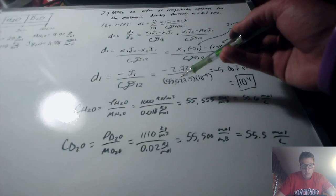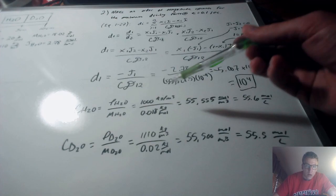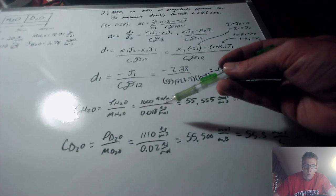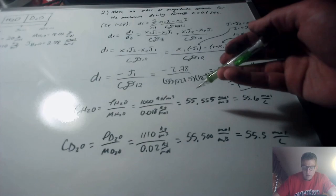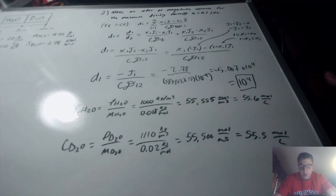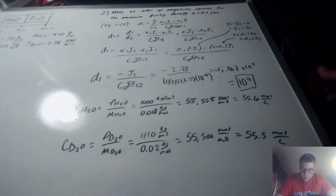Finding the molar concentration of water: density divided by molecular weight equals 1000 kilograms per meter cubed divided by 0.01802 kilograms per mole, giving 55,555 moles per meter cubed, or 55.6 moles per liter. For deuterium: 1110 kilograms per meter cubed divided by its molecular weight gives 55,500 moles per meter cubed, or 55.5 moles per liter. We use the average of these two values: 55,527.5 moles per meter cubed.